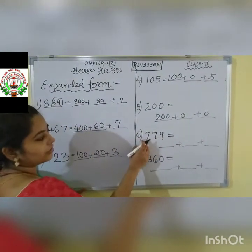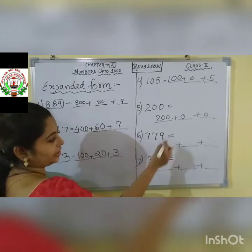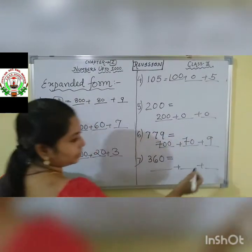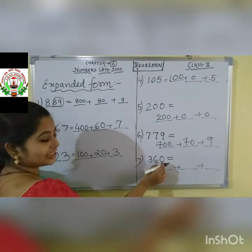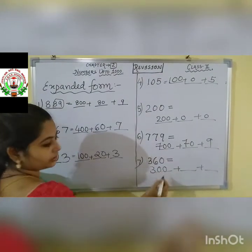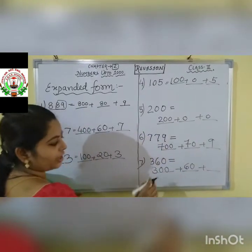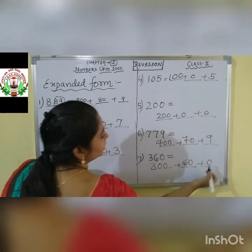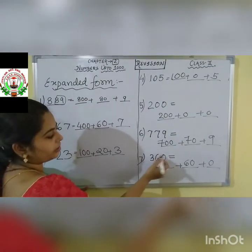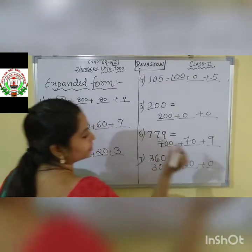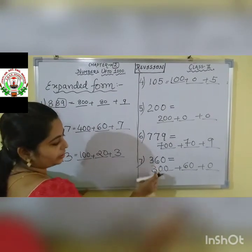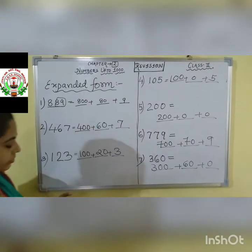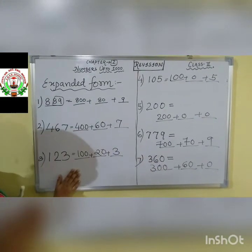Next question 6: 179. 100, then 70, then 9. So 179 = 100 + 70 + 9. Next: 360. 300, then 60. Then anything in the ones place? No, zero is there. So we will write down zero. If you are finding any place value is zero, then directly write down zero. So 360 = 300 + 60 + 0. Do this one also. Practice it very well.